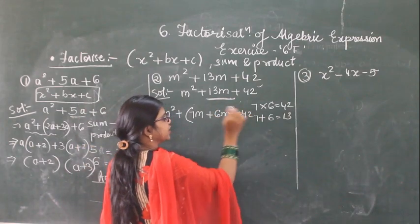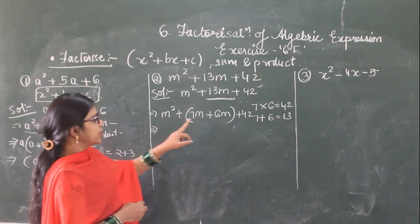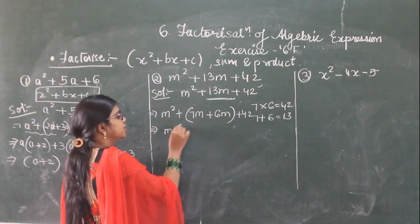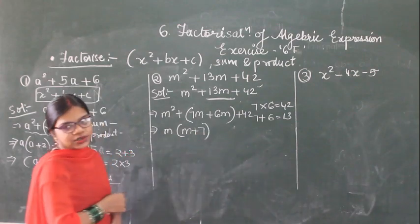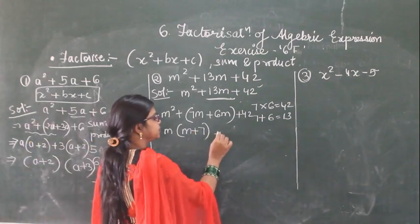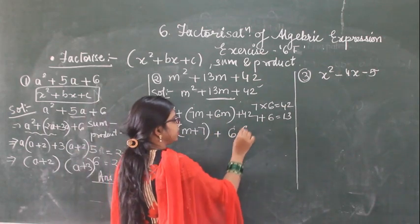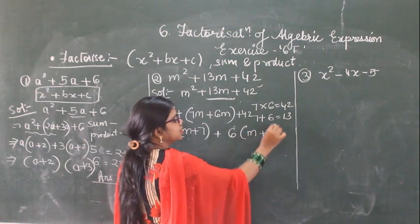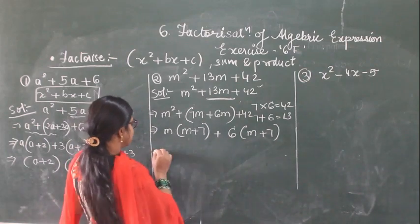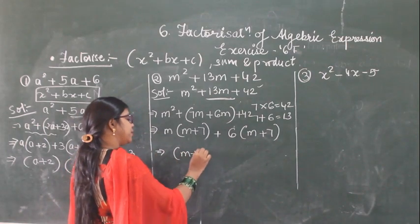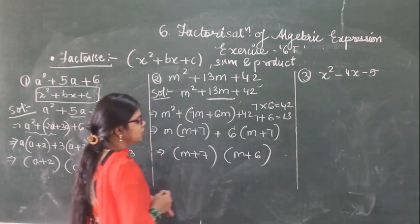I find that 7 plus 6 gives 13. So both numbers satisfy this expression. So I can write down this as m square plus 7m plus 6m plus 42. So 7m plus 6m will equal 13m. Now take the common terms. From m square plus 7m, I take m common and what is left is m plus 7. Then from 6m plus 42, I take 6 common and what is left is m plus 7. So m plus 7 is common, giving m plus 7 times m plus 6. That is the answer.